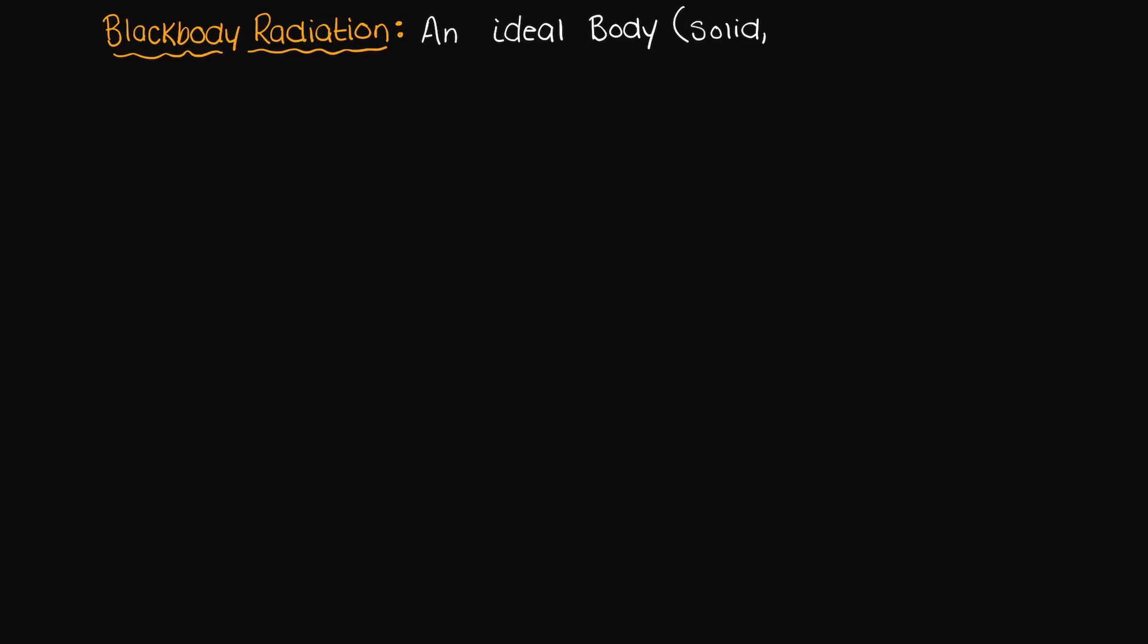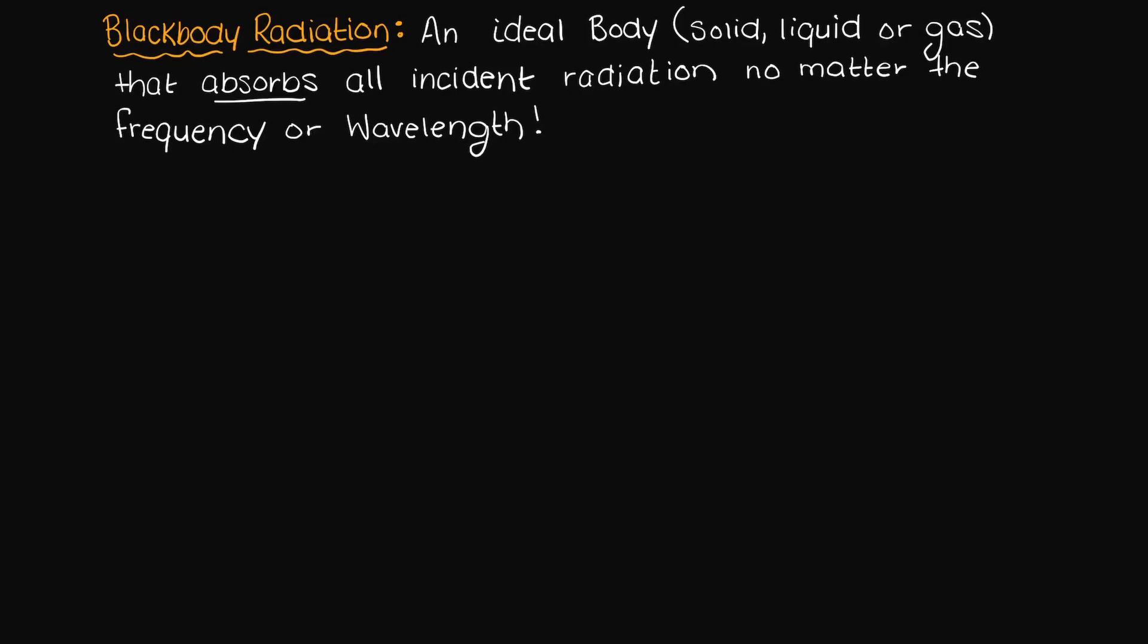A blackbody is an ideal body, so a physical object that is either a solid, liquid, or a gas that absorbs all incident radiation no matter the wavelength or angle of incident. Therefore, we can say that a blackbody is a perfect absorber.